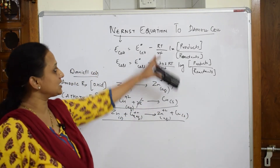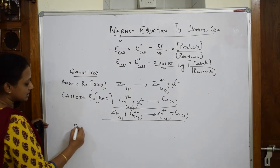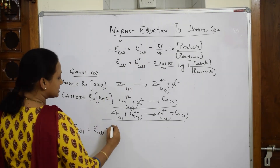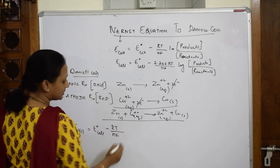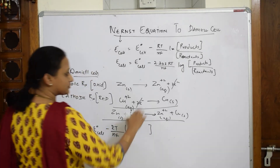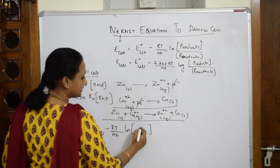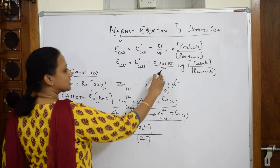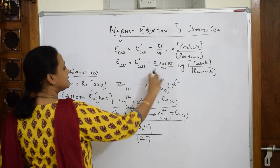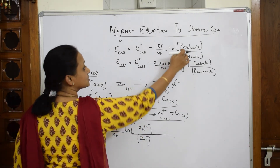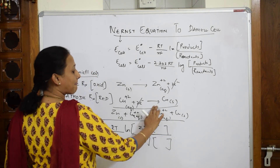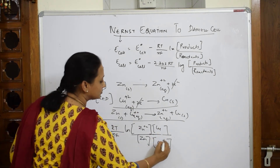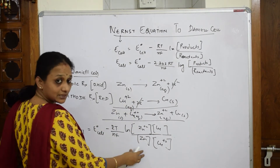Now applying the Nernst equation: E_cell = E°_cell minus RT by NF times ln of products by reactants. For the oxidation half-reaction, we write Zn²⁺ over Zn (products by reactants), and for the reduction half-reaction, we write Cu over Cu²⁺ (products by reactants).